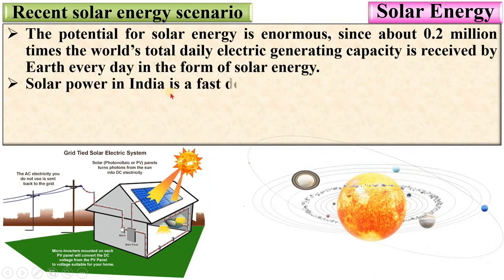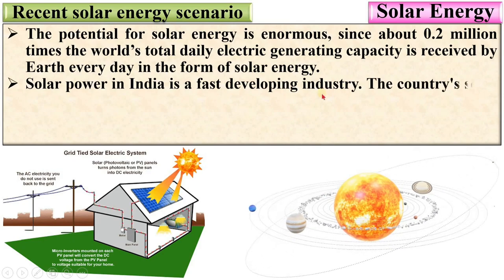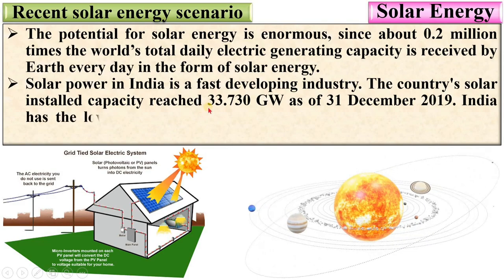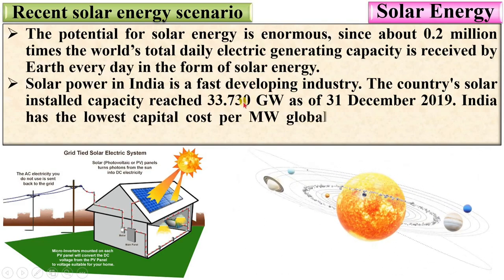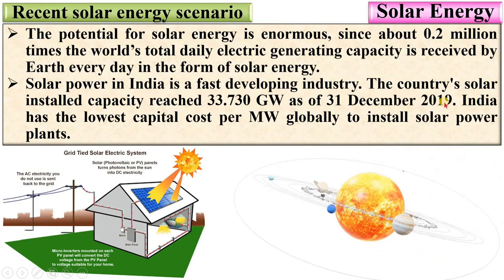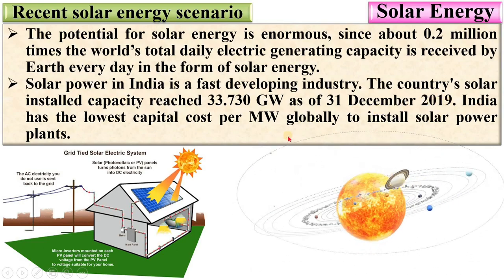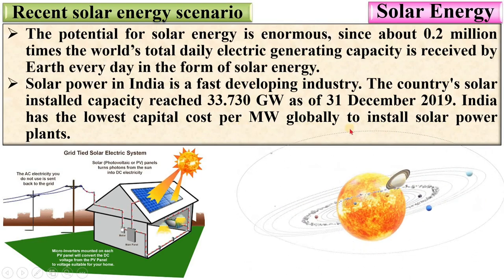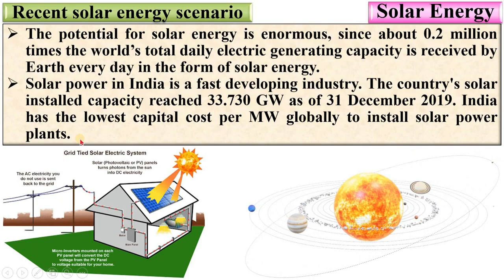Solar power in India is a fast-developing industry. The country's solar installed capacity reached 33.730 gigawatts as of 31st December 2018. India has the lowest capital cost per megawatt globally to install solar power plants.